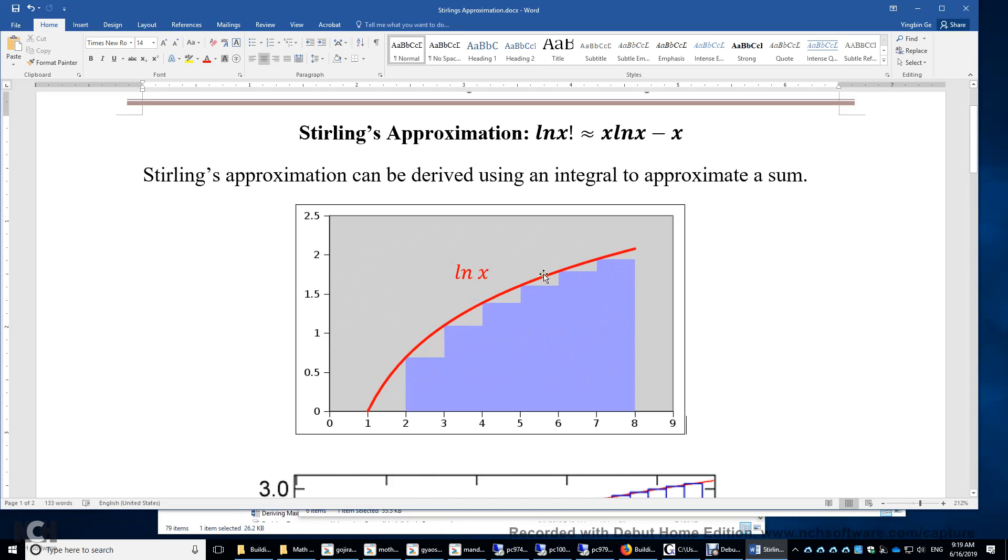If we look at this function curve, this is ln x. ln 1 is 0, ln 2 is 0.7 roughly, ln 3 is roughly 1.1, ln 4 is roughly 1.4, and so on. So if we look at this area under this ln x curve,